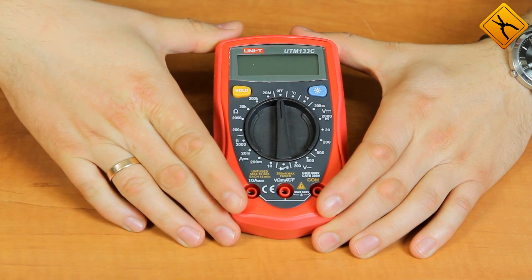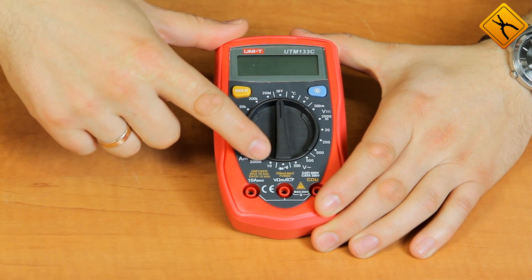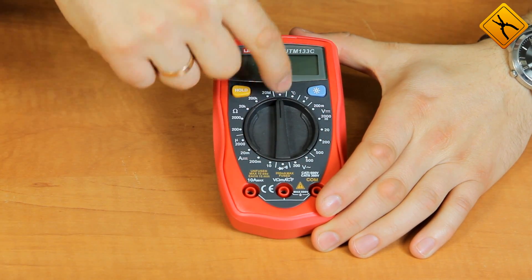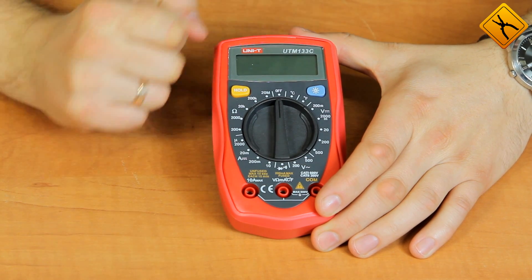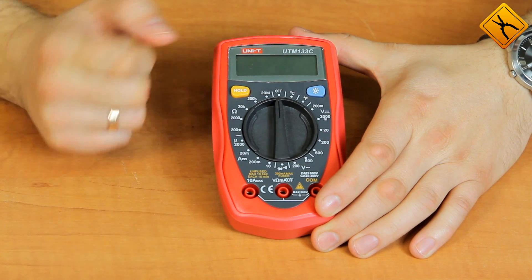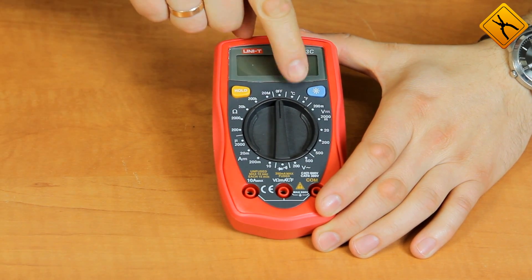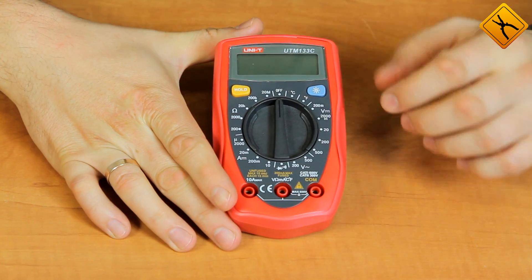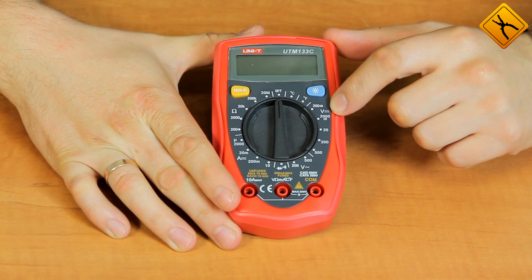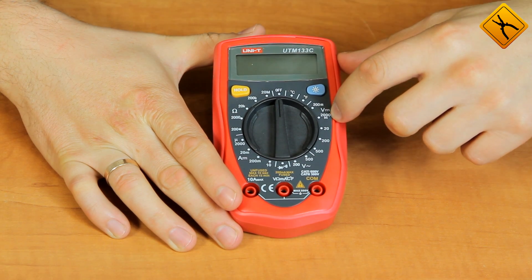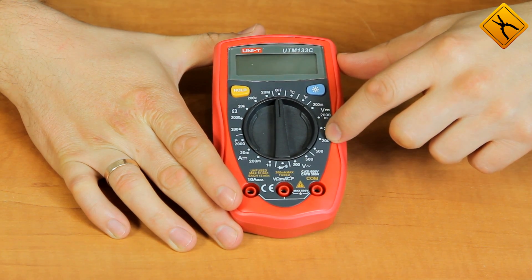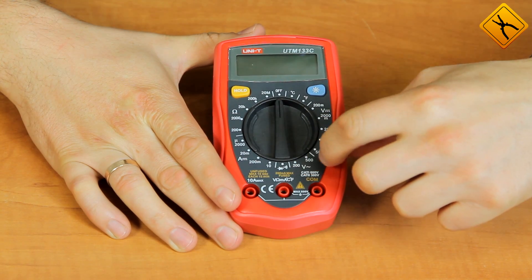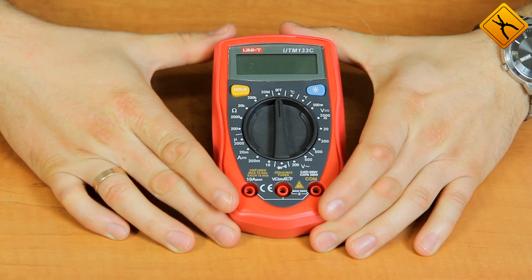If you look at the rotary switch, you may see that all the possible functions and measuring ranges are marked around it. This multimeter is capable of measuring temperature in Celsius and Fahrenheit degrees, direct voltage in ranges of 200mV and 2000mV, 20V, 200V and 500V, and alternating voltages in ranges of 200V and 500V.